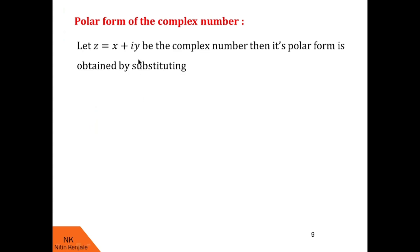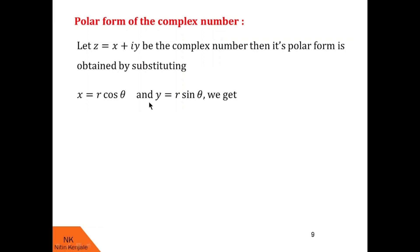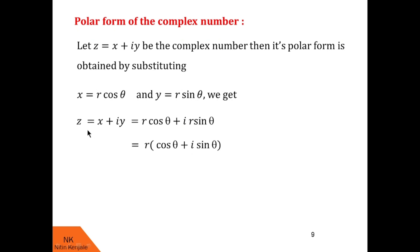Let z equal to x plus iy be any complex number. Then its polar form is obtained by substituting x equal to r cos theta and y equal to r sin theta in z. Note that x equal to r cos theta and y equal to r sin theta is the relation between Cartesian coordinates x and y and polar coordinates r and theta. After substituting these values for x and y in z, we get z equal to r cos theta plus i into r sin theta. Since r is common, we get z equal to r into cos theta plus i sin theta.